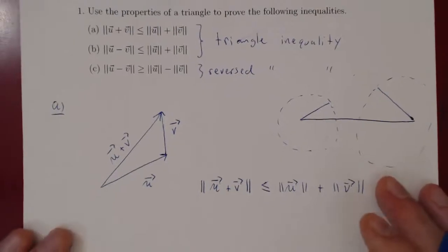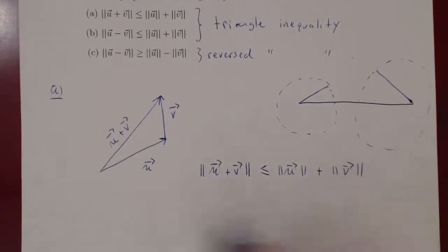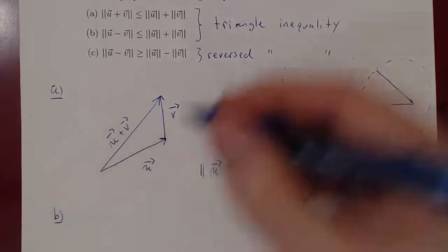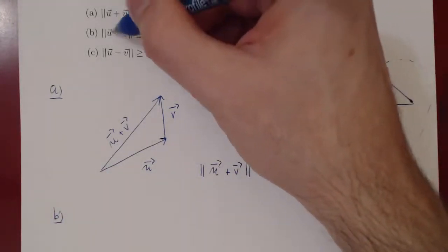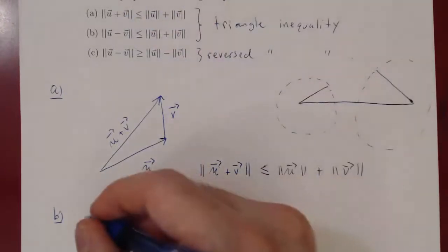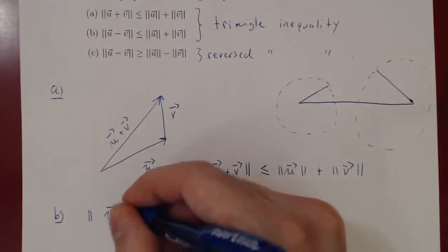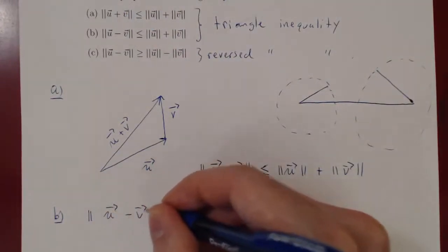Now we can prove b in one line using a, right? b says simply that the result holds with a subtraction. So instead of u plus v, u minus v. But if you think of it, this is quite easy, because u minus v, we know, simply means the norm of u.